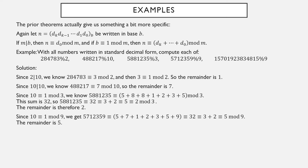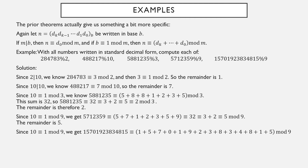For 5,712,359 divided by 9: since 10 ≡ 1 mod 9, replace the number with the sum of its digits, which is 32. Then replace 32 with its digit sum: 3+2 = 5. Since 5 is a single digit, the remainder mod 9 is 5. For the large number 15,701,923,834,815 divided by 9: add up all the digits to get 57, then add those digits to get 12, then add again to get 3. The remainder under division by 9 is 3.